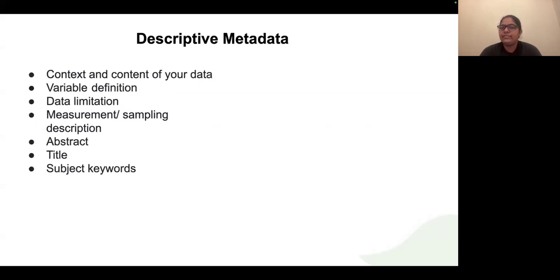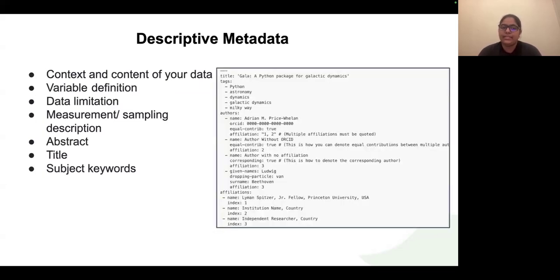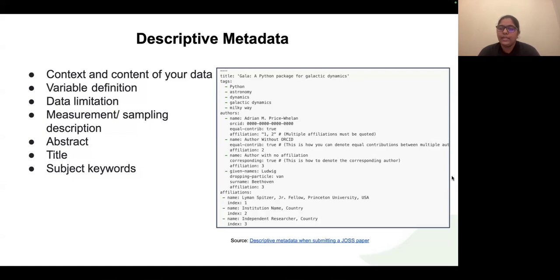One type of metadata is descriptive metadata. Descriptive metadata includes variable definitions, abstracts — if it's a research paper, the title, abstract, and keywords of that paper — and any limitations on the dataset. For example, the image shows metadata from a Journal of Open Source Software paper, giving information about who the authors are, their ORCID IDs, their names, their affiliations, and the title of the paper. All of this is metadata for a particular research paper in JOSS.